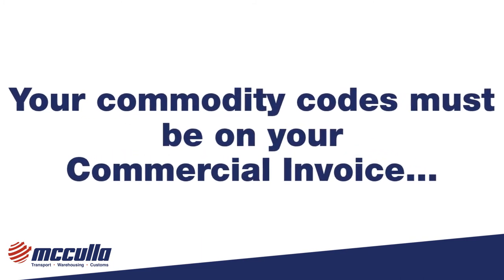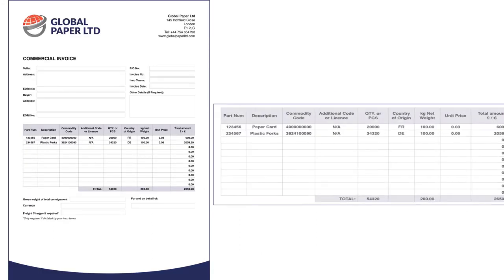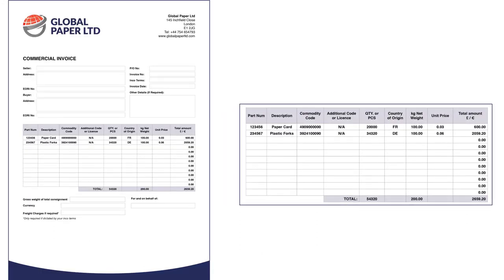Your commodity codes must be displayed on your commercial invoice for each of your products. Your customs agent will also need to see the value of the product, the net weight and quantity on the invoice.